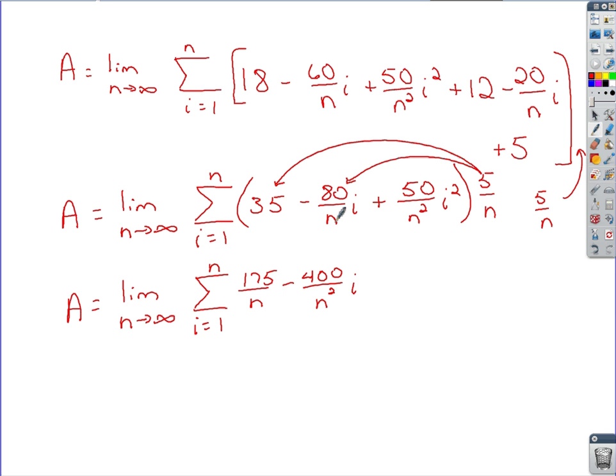Actually, it would be 400 over n squared, because you're taking n times n here. That would be plus 5 times 50. We've got 250 over n times n squared would be n cubed, i squared.